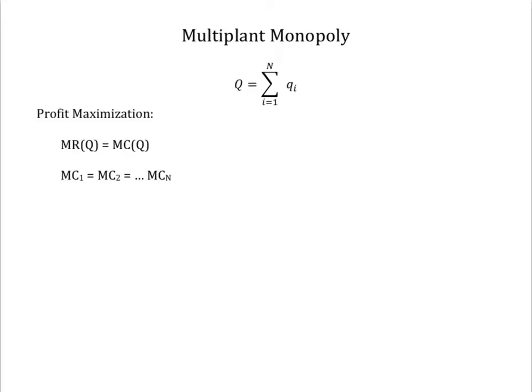The simplest way to visualize the solution to a multi-plant monopolist profit maximization problem is to first determine how much to produce at each plant at each desired level of marginal cost, that is, as marginal revenue rises, then determine total output for each level of marginal cost by summing up production across all plants.